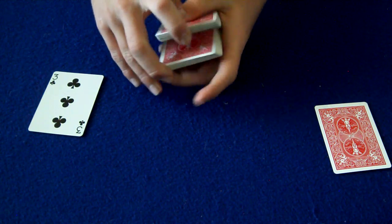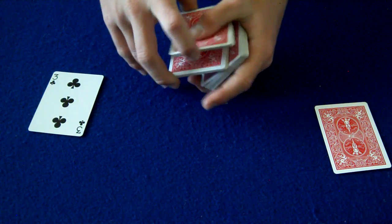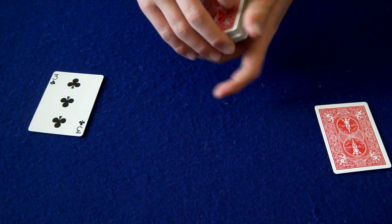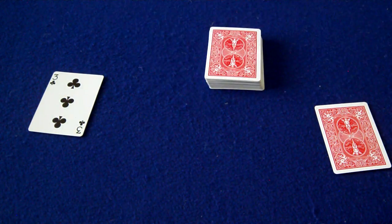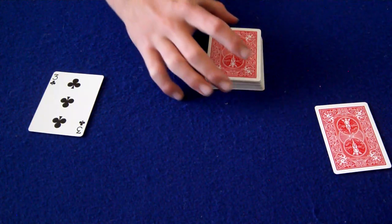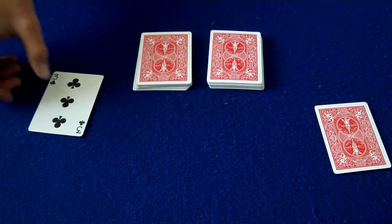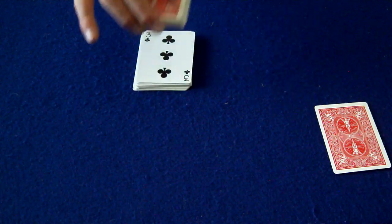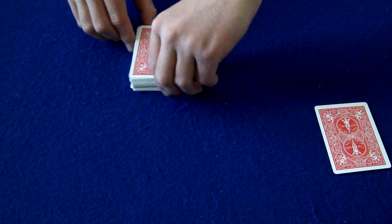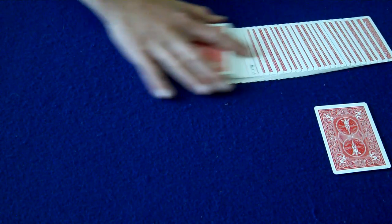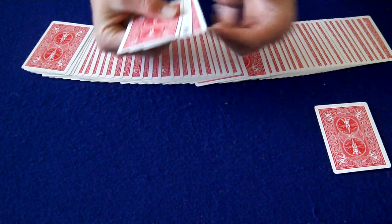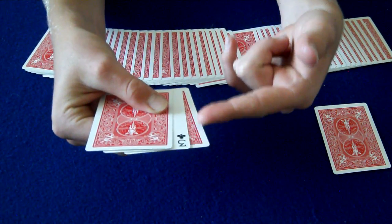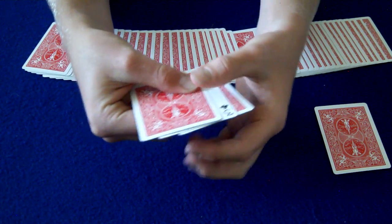Then give the deck a cut, just like this. And then now it's the spectator's turn to cut the cards. So the spectator just cuts it anywhere they want like this and then marks their cut with the Three of Clubs, just like that. So now it's completely in the center of the deck. As you can see, there's a card below and above the Three of Clubs.